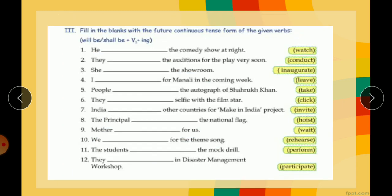Now fill in the blanks with the future continuous tense. In future continuous tense you have to use will be or shall be plus first form of the verb and ing. The verb is already given here in root form, so just add ing, and before these verbs put will be or shall be. He will be watching the comedy show at night.